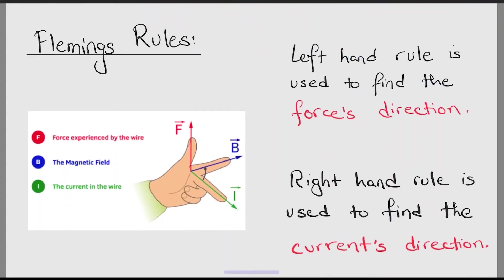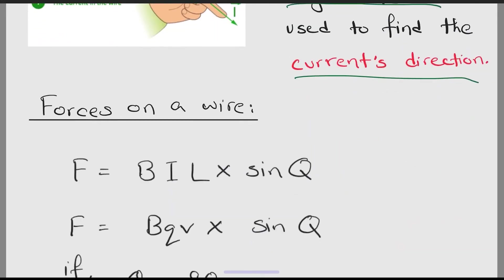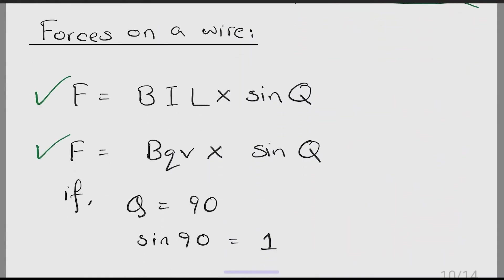The next topic is about Fleming's rules. Fleming's left hand rule is used to find the force direction on the wire. Fleming's right hand rule is used to find the direction of current on the wire. Moving on, there are also several equations to find the force on the wire.